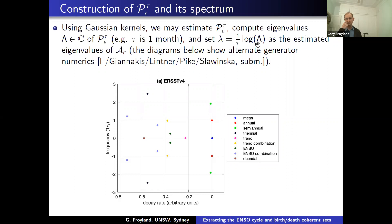This is the complex plane, with the imaginary axis here. Eigenvalue zero corresponds to the mean — the stationary state. What we're interested in are these two spectral points with imaginary parts of plus/minus approximately one-quarter, corresponding to the ENSO cycle with a period of about four years. In the paper there is more detail about the other spectral points — annual cycles, semi-annual cycles, and combinations of these with ENSO.